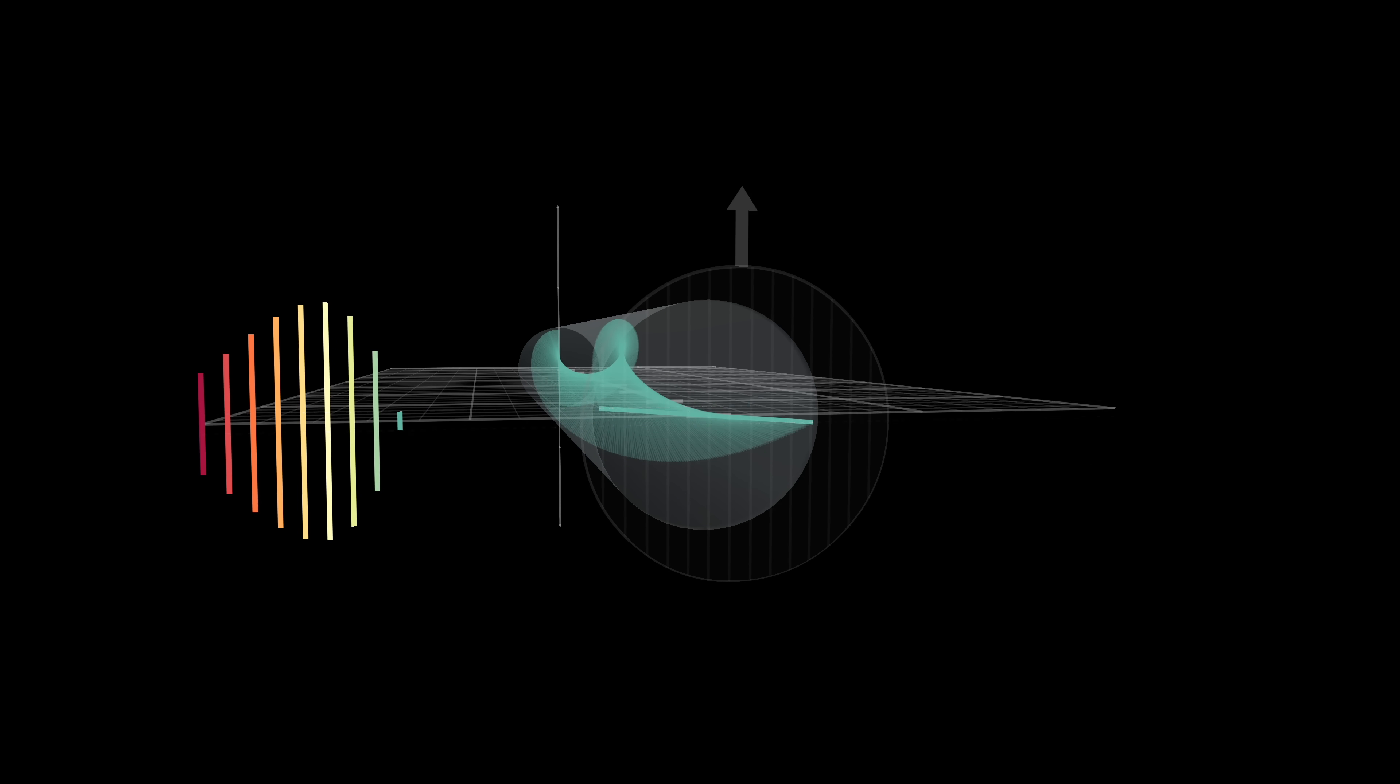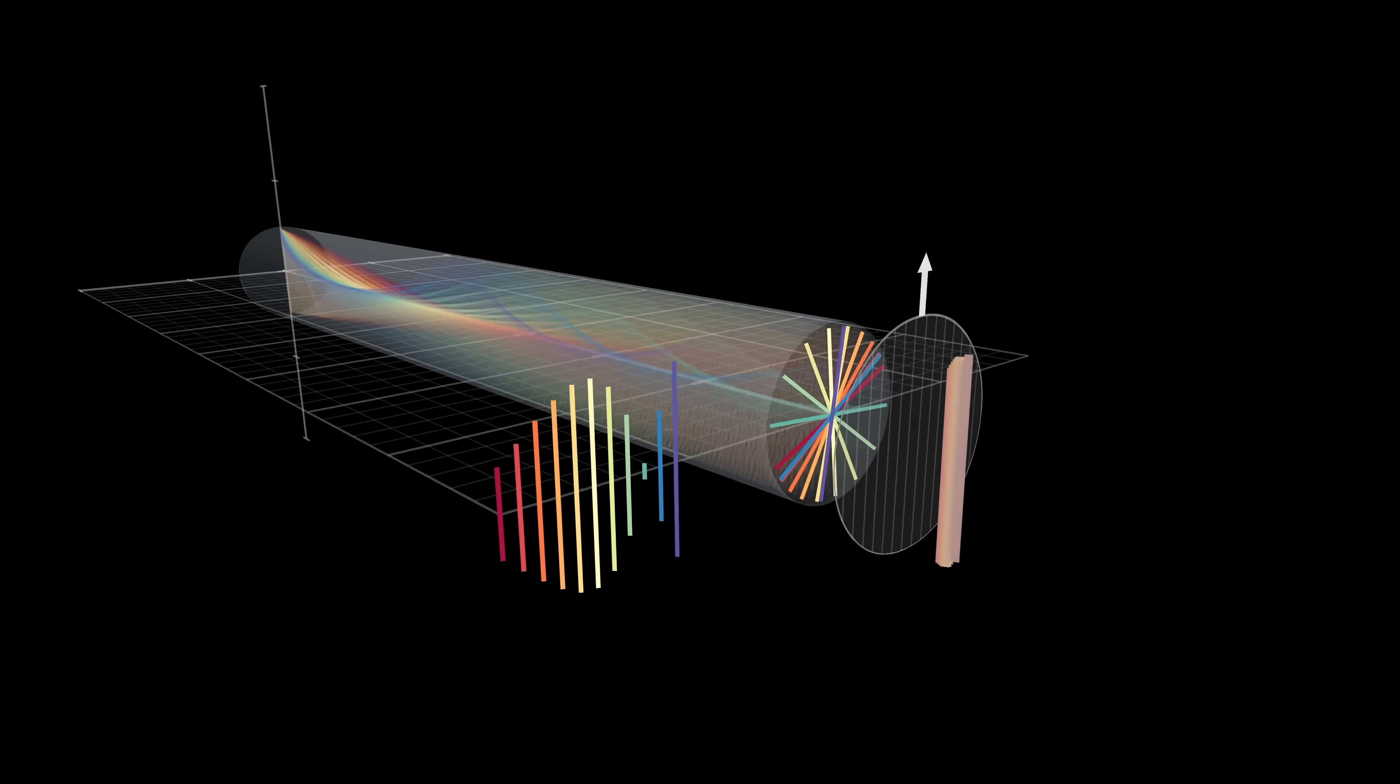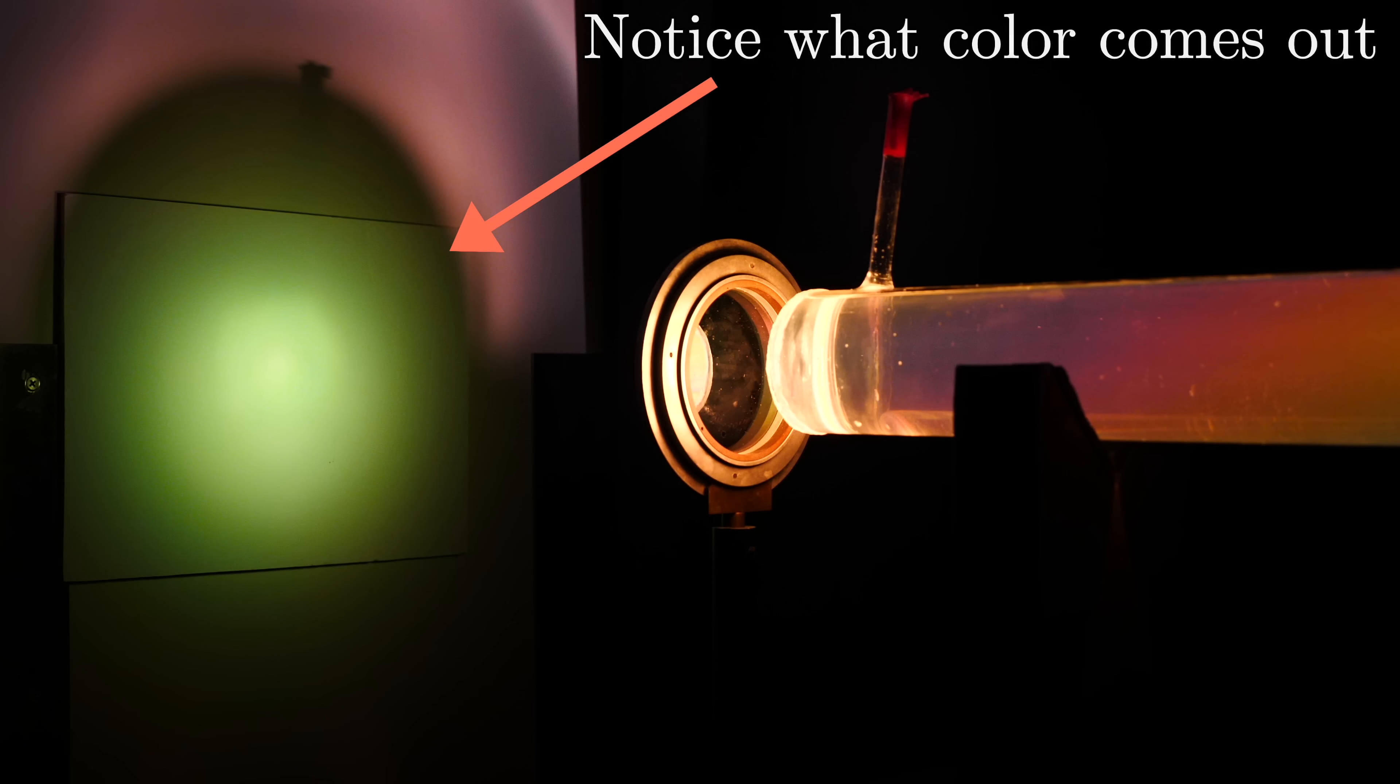So the light coming out the other end of this filter is some imbalanced combination of all of the pure frequencies, which is why what we see coming out the other end is no longer white, but some other color.